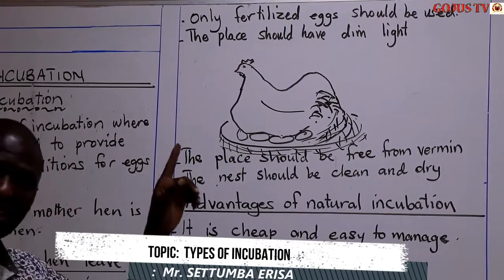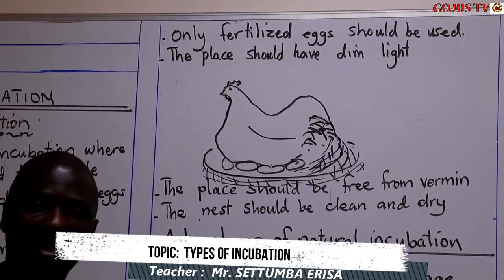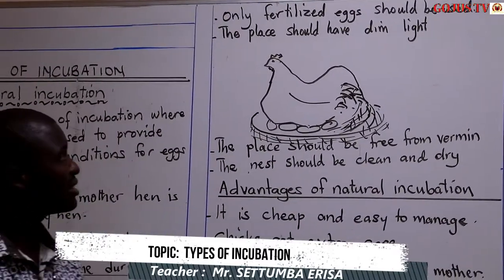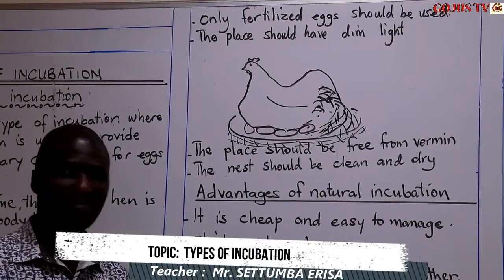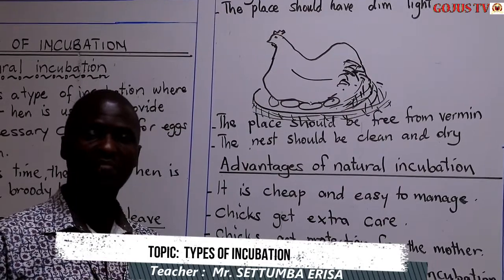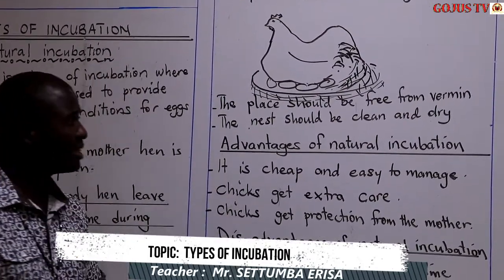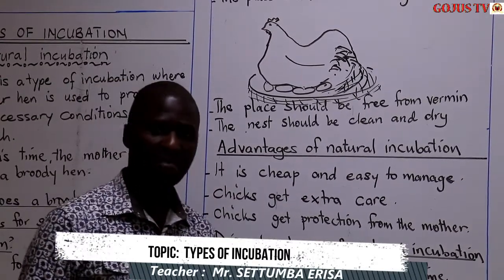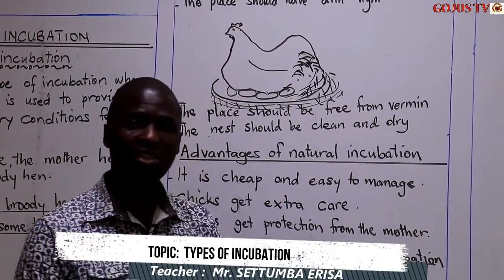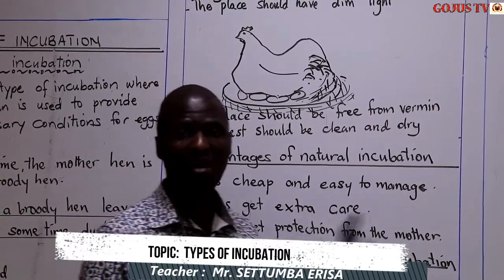So only fertilized eggs do hatch. We need to ensure that at the time the hen was laying eggs, there was a cock available. Number two, the place should have dim light. The place where the hen is incubating from should have dim light — there shouldn't be a lot of light, so there should be some level of darkness. Number three, the place should be free from vermin. Vermin refers to all those harmful animals and insects that can bring harm to our chicken.